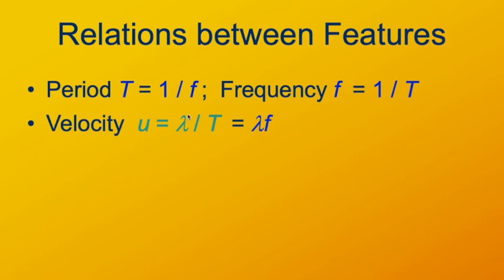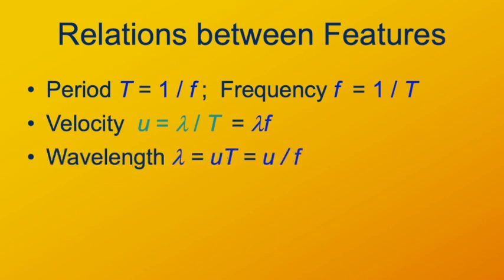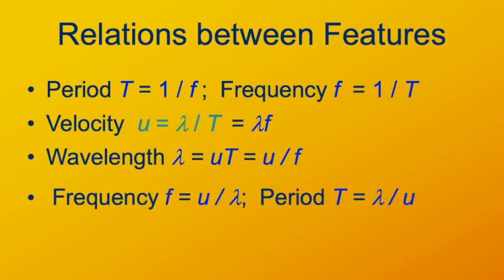The symbol λ (lowercase Greek lambda) is conventionally used for wavelength. Rearranging the wave equation: λ equals speed times period, or speed divided by frequency. Frequency equals speed divided by wavelength. Period equals wavelength divided by speed. If you take some time to think about these, they all make sense.